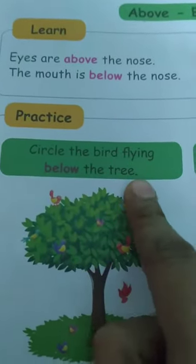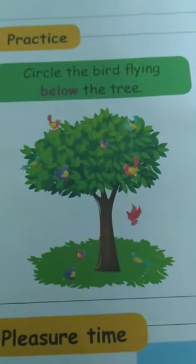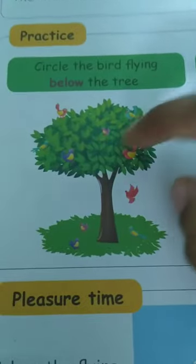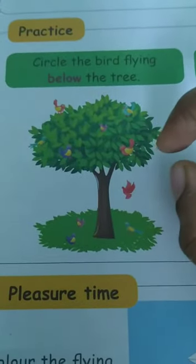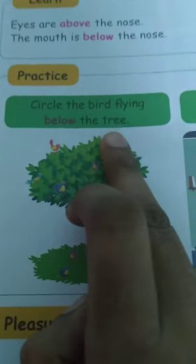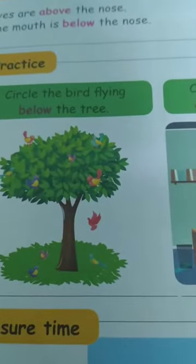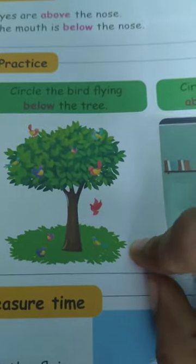Next — circle the bird flying below the tree. What does 'below' mean? Look at this picture — there is a tree and a lot of birds are flying. Some birds are flying at the uppermost place and some are flying below. We want to circle the one flying below the tree. Below means the lower part, the lowest part.